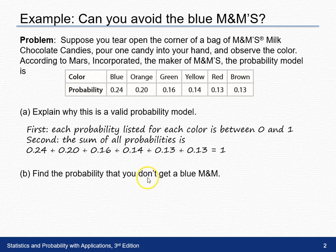So the probability of not getting a blue, we can use the complement rule here, and the complement rule tells us not getting a blue is 1 minus the probability of getting a blue. So 1 minus the 0.24 tells us the remaining 0.76 are not blue.